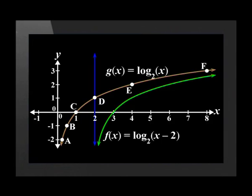f has been plotted on the same set of axes as g. We can see that the asymptote has also moved 2 units to the right. The asymptote for f is x = 2. Did you notice that the x-intercept also moved? It's now (3, 0).